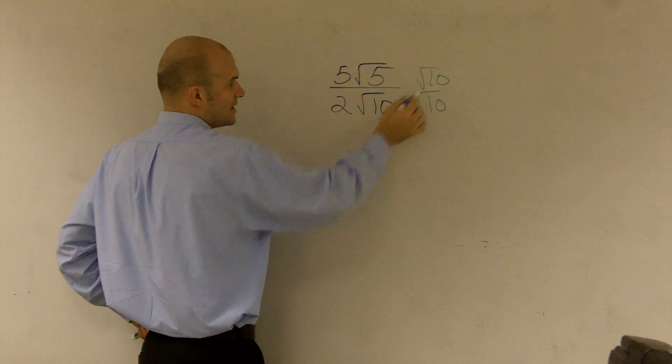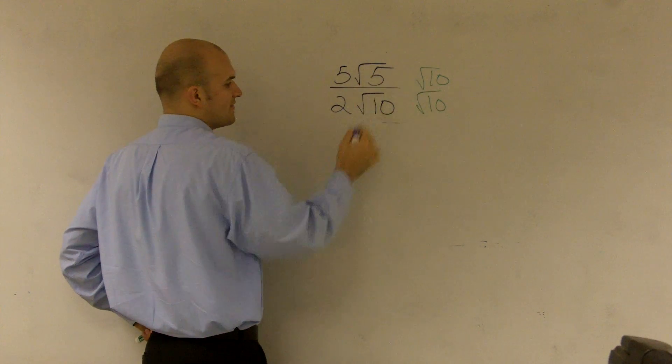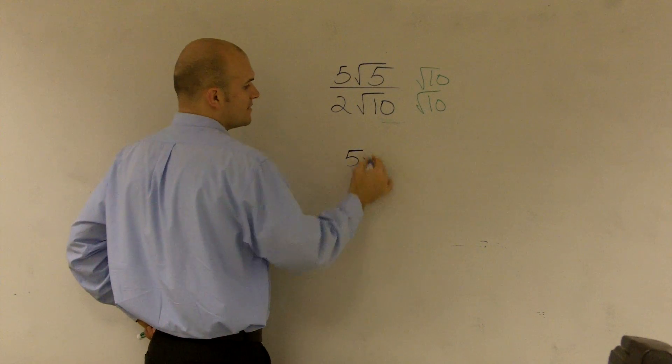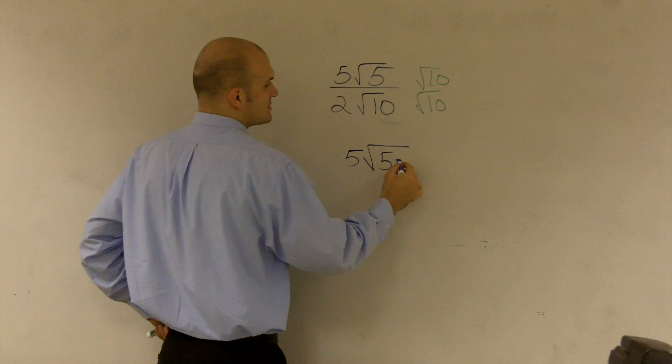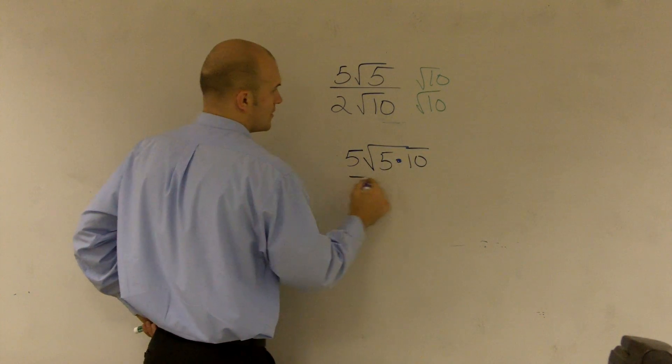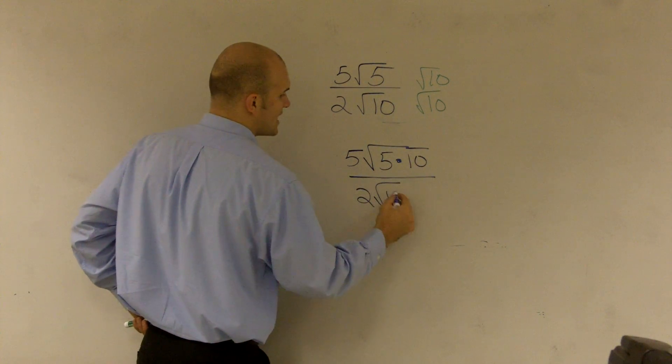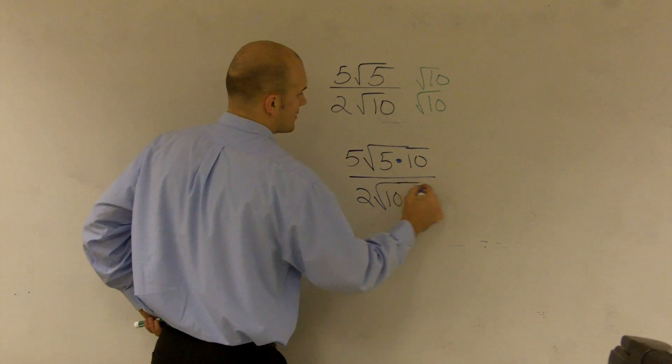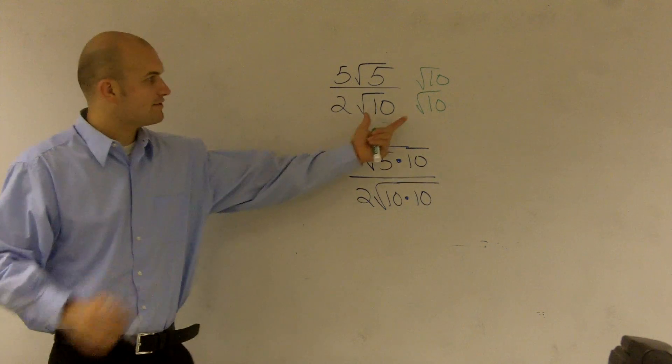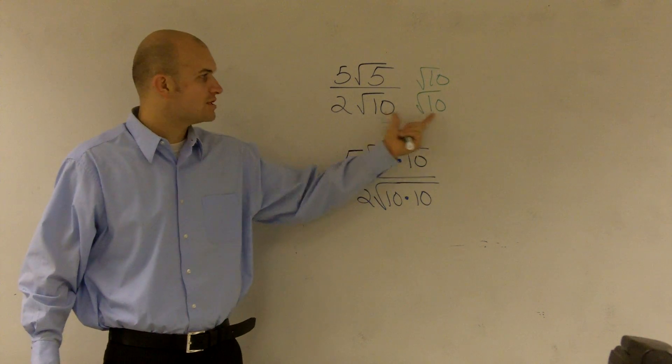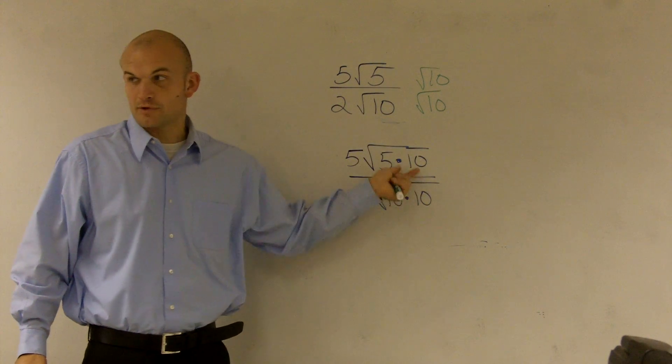And up here we'll do square root of 10, 10 square root of 5. So what I have is square root of 5 times 10 all over 2 square root of 10 times 10. That's a rule of exponents. Whenever you multiply two separate roots, you can combine them together inside of the roots.